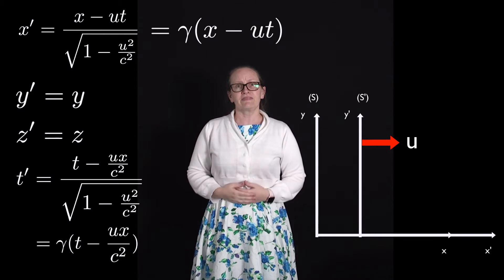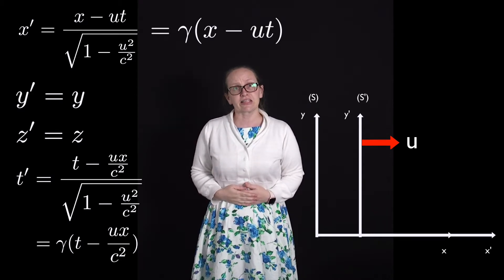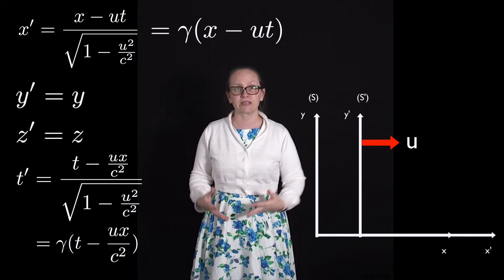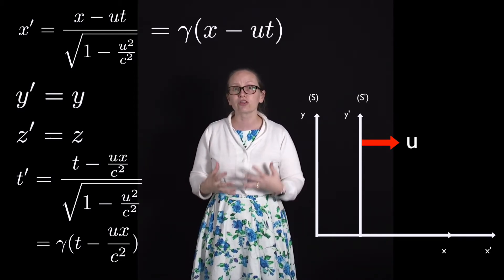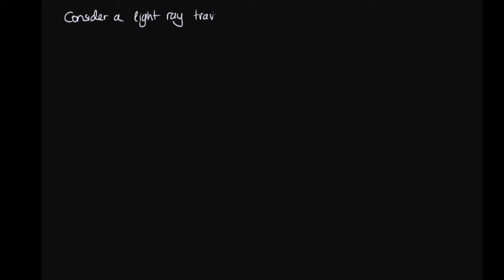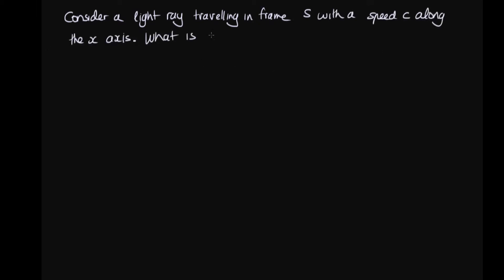Now that we've seen the Lorentz transforms, let's show that they do predict a constant speed of light. Consider a light wave travelling in frame S with speed C along the X axis. What is its speed in S' according to the Lorentz transforms?